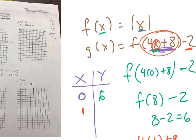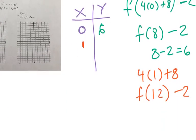So what's f of 12? Well, it's the absolute value of 12. The absolute value of 12 is 12. 12 minus 2 is 10. So 1 becomes 10. Let's pick another one.